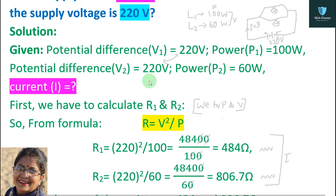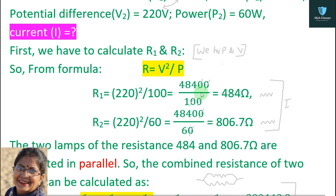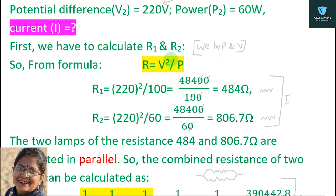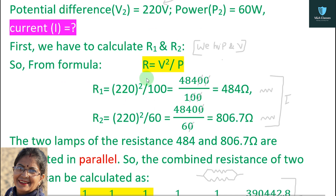Now for Step 1, we calculate the resistance of each lamp using the formula R = V² / P. For lamp 1: R1 = 220² / 100 = 48400 / 100 = 484 ohm. The unit of resistance is ohm.